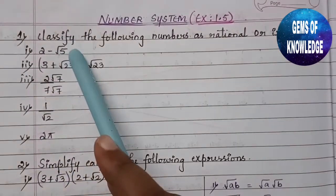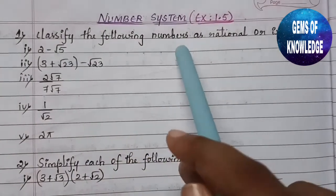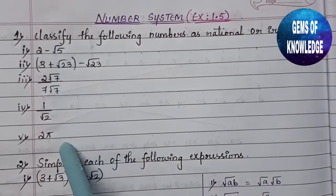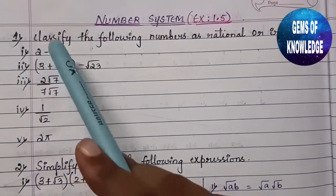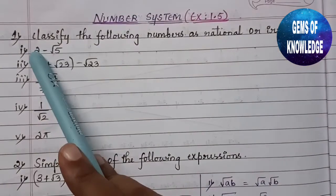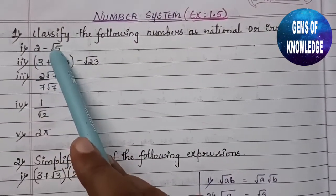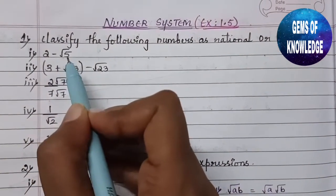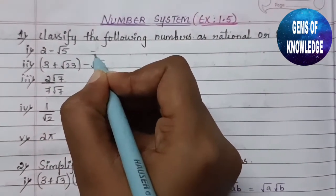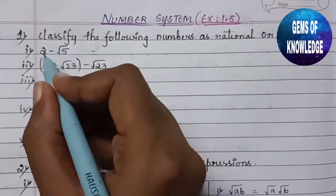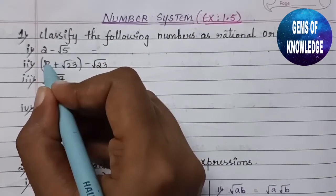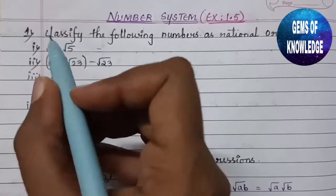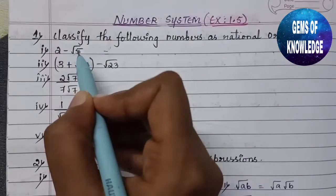The first question asks us to classify the following numbers as rational or irrational. For the first one, 2 minus root 5 is given. Root 5 is an irrational number, and 2 is obviously a rational number because it can be written as 2 divided by 1.